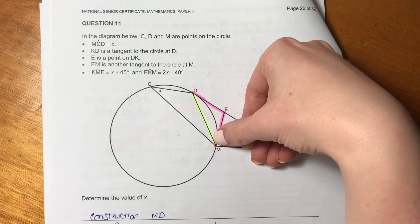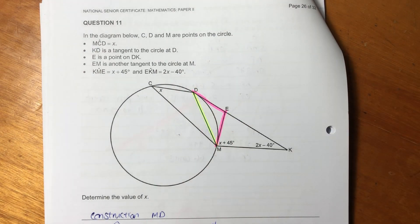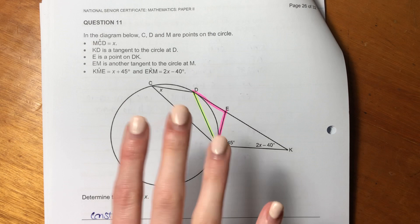So ignore this line that I've drawn in here. That's a construction. So just ignore that. I'll explain that just now.